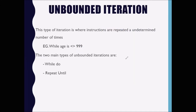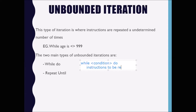We have two structures for unbounded iteration: while and repeat-until. The while structure checks the condition before the instructions in the loop are executed. The syntax for a while loop is: while [condition] do, followed by the instructions to be repeated, then end-while.